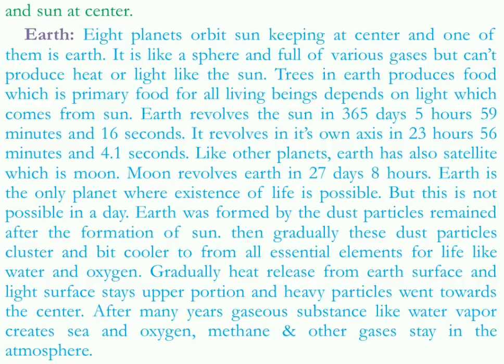Earth revolves around the sun, and it takes 365 days, 5 hours, 59 minutes and 16 seconds to complete one revolution. That is why in every four years, if we add this total extra time, we have one more day — that is called a leap year. Every fourth year there is an extra day, making it 366 days, while the rest of the three years it is 365 days. Earth is not revolving around the sun only — it also revolves on its own axis, and it takes 23 hours, 56 minutes and 4.1 seconds to revolve on its own axis.